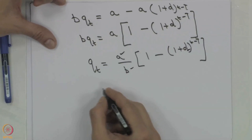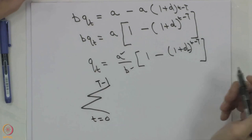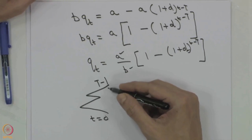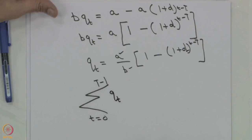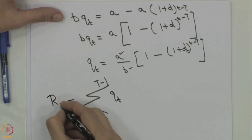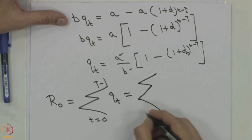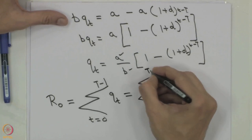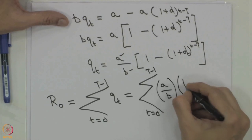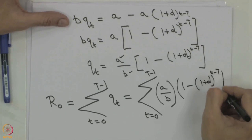What we can do is sum Qt from t = 0 to T minus 1. We say T minus 1 because Q at capital T equals 0, so production runs from t = 0 to T minus 1. This sum must equal the total reserve R0, or what we called Q_max. We can write: sigma from t = 0 to T minus 1 of (A/B)·[1 minus (1+d)^(t minus T)] = R0.